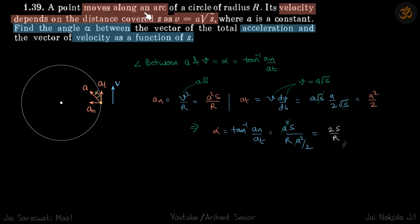A point is moving along an arc of a circle. Its velocity depends on distance covered as v = a√s, where a is a constant. We need to find the angle α between the acceleration and the velocity as a function of s.